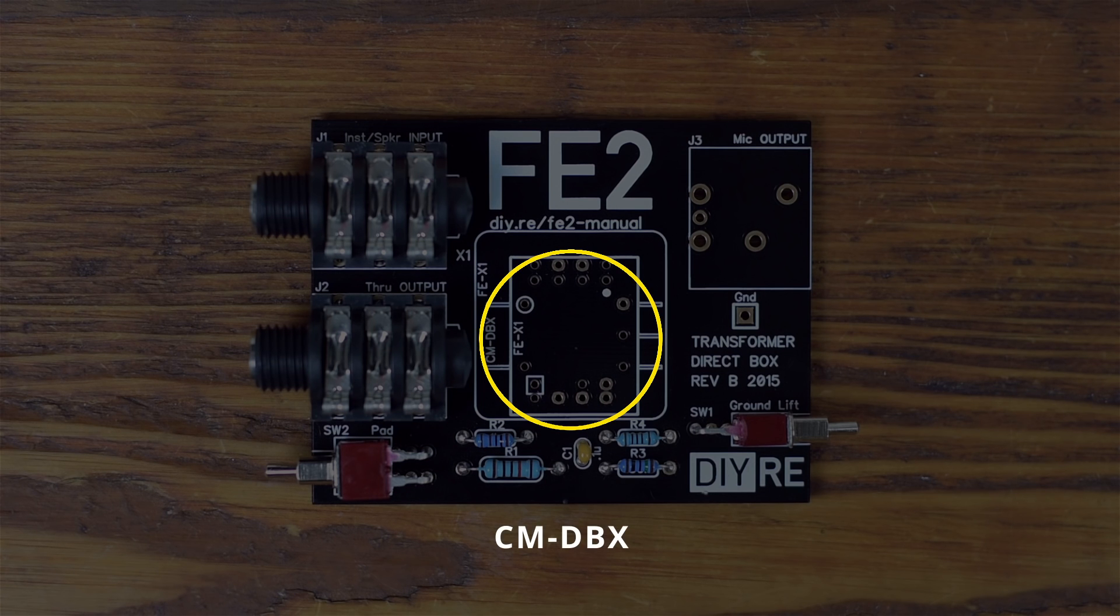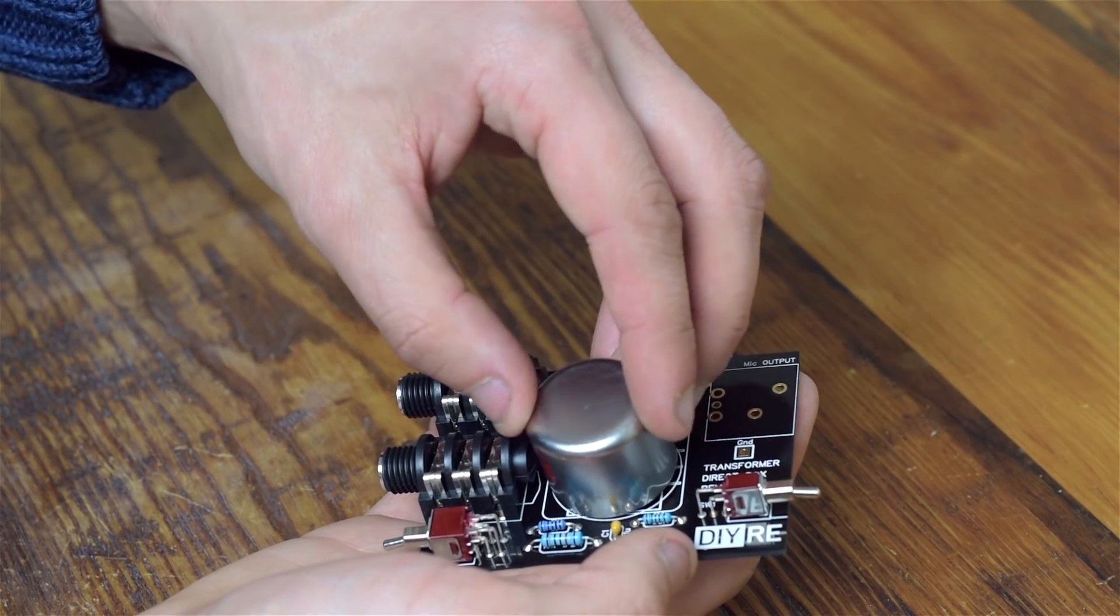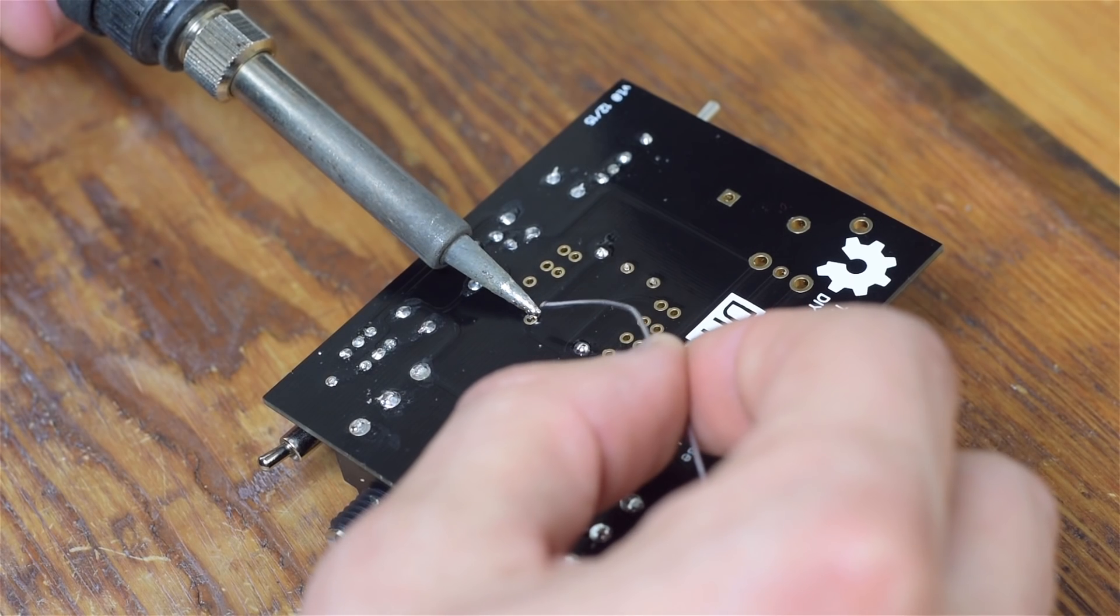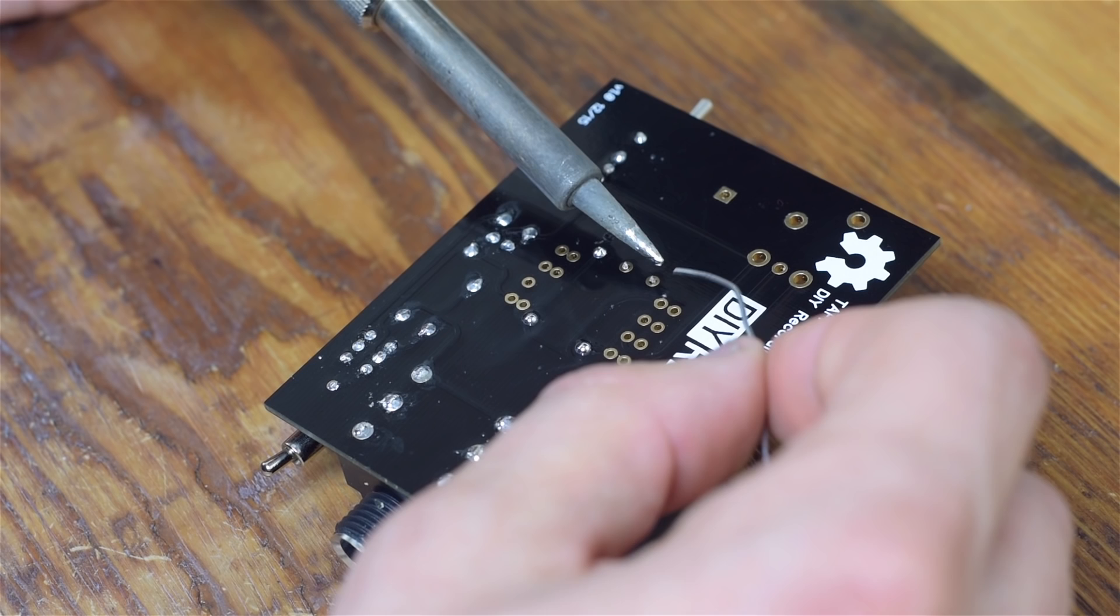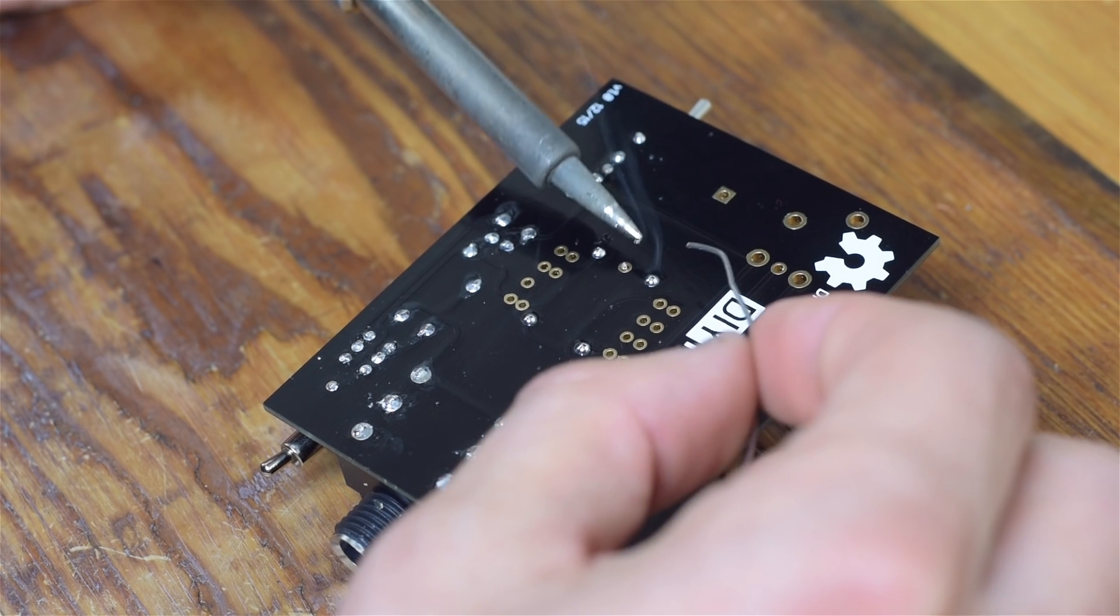The CMDBX goes in the round footprint. Pin 1 is marked by a red dot on the transformer and a white dot on the circuit board. Double check that these are aligned and then place the transformer. Once you're sure you've got your transformer in the right position and orientation, solder it to the circuit board and, if necessary, trim the excess leads.